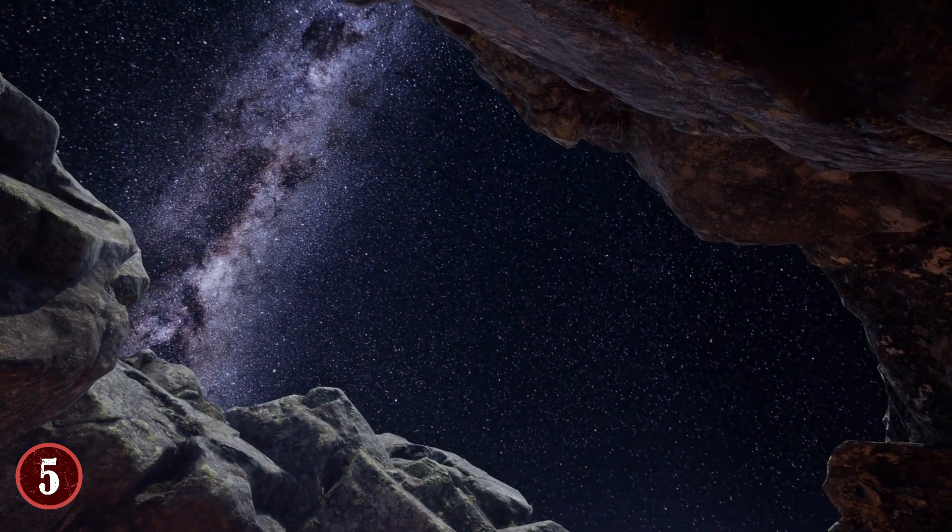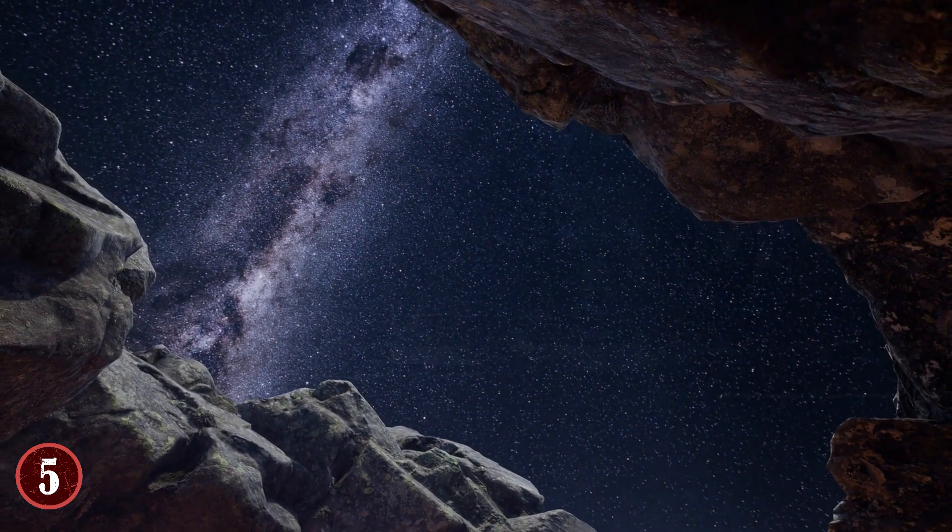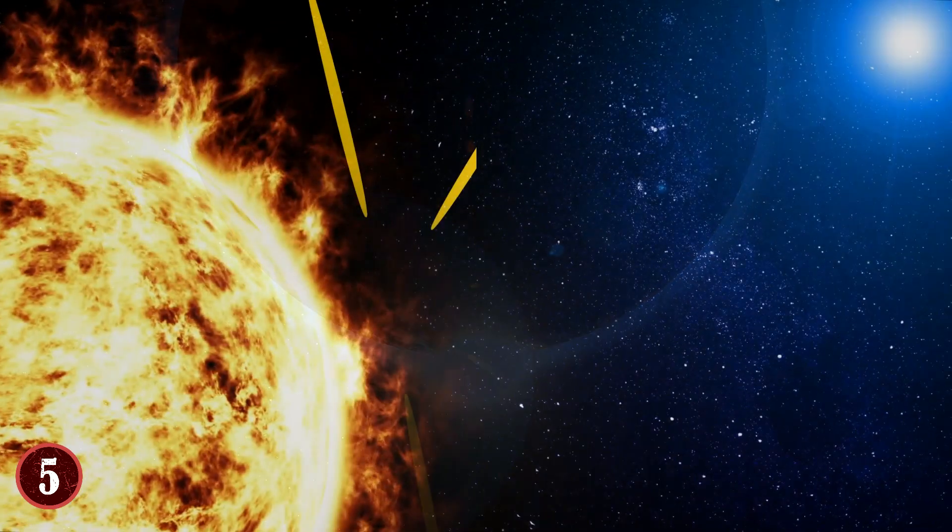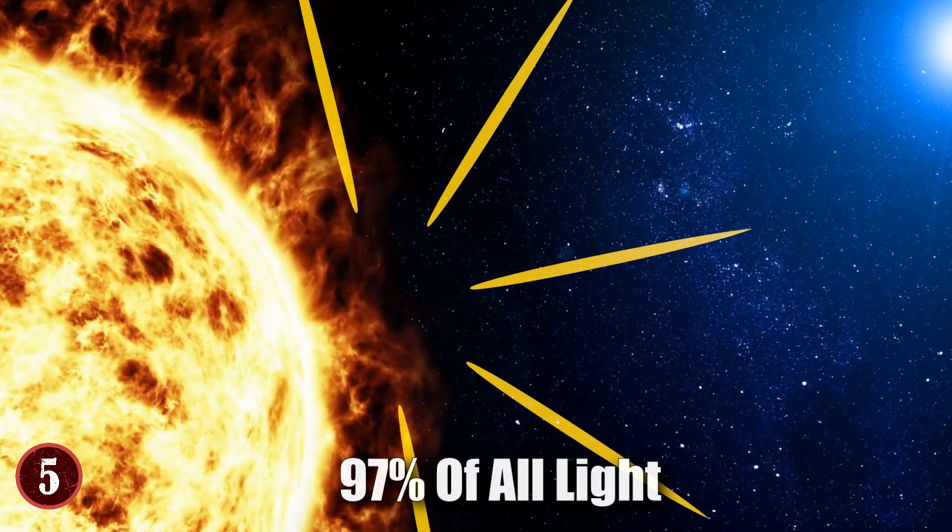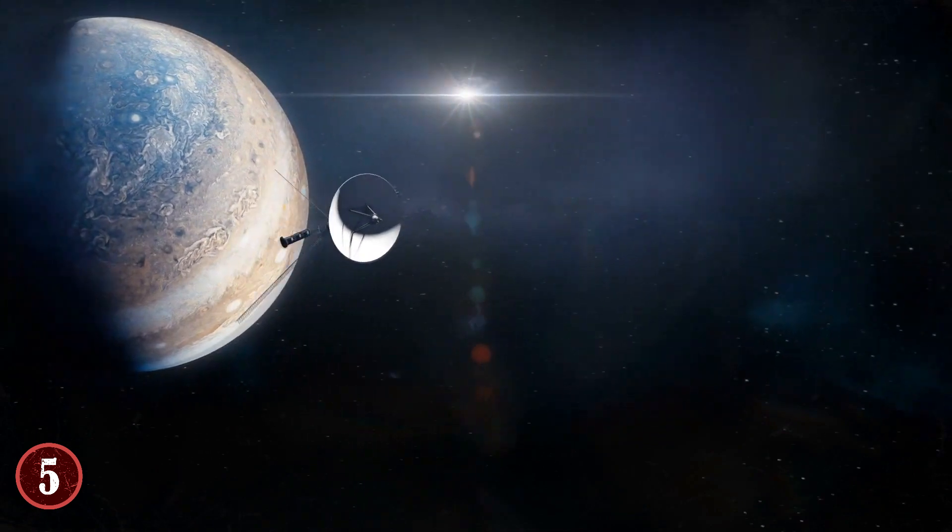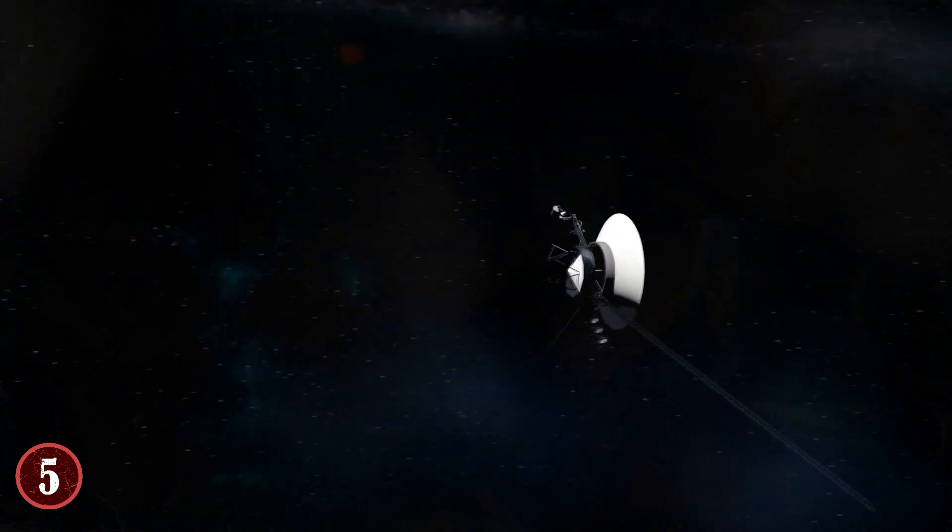As for what the surface of the planet is, we don't know. And it's not for lack of trying. Rather, Hat P7b is also one of the darkest planets in the universe. It absorbs 97% of all light sent to it by its sun. So even with our most powerful telescopes and probes and satellites, we can't see the surface.